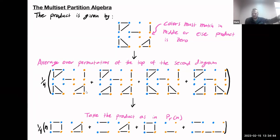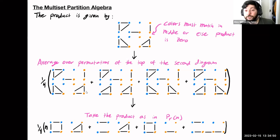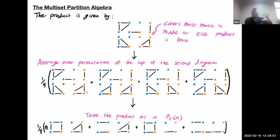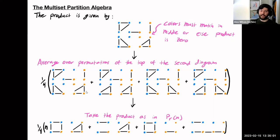Something just occurred to me — is this product commutative? No, it shouldn't be. Well, neither is the partition algebra. Right, the partition algebra is definitely not commutative. And this is not going to be commutative either.